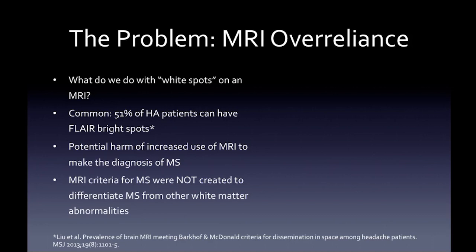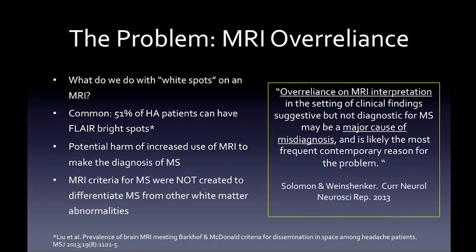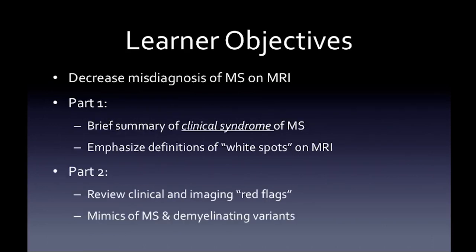You have to remember that the MRI criteria for multiple sclerosis were not created to differentiate MS from other white matter abnormalities, but to identify patients at risk for converting to MS after their initial presentation. Over-reliance on MRI interpretation in the setting of clinical findings suggestive but not diagnostic for MS may be a major cause of misdiagnosis.